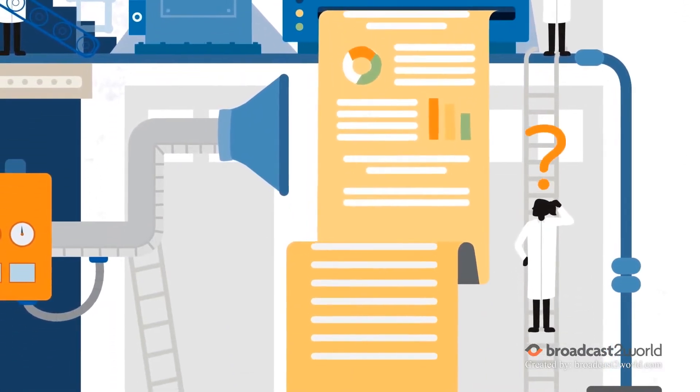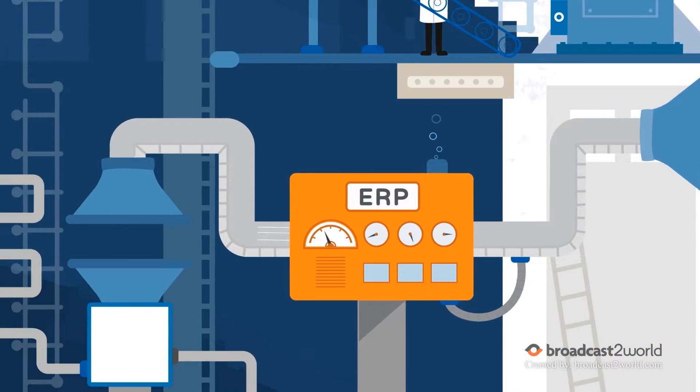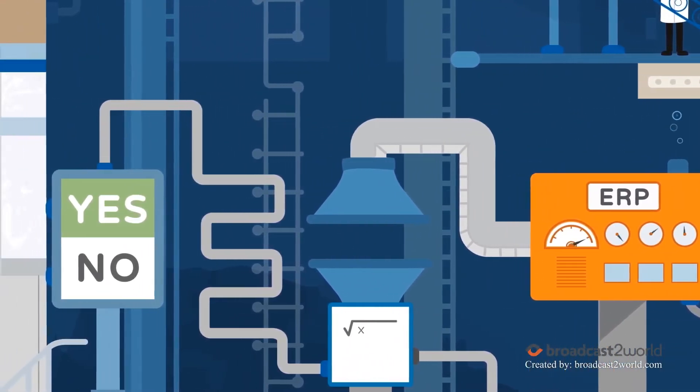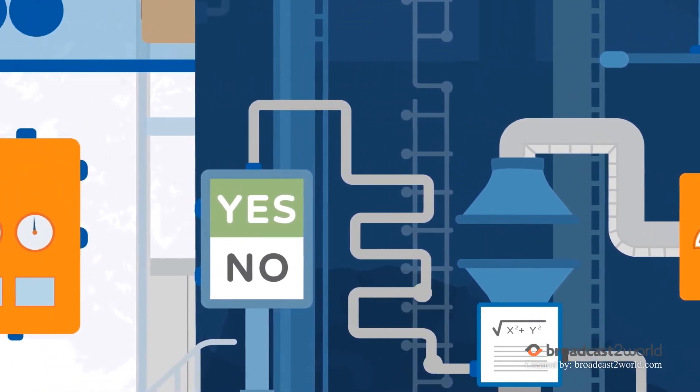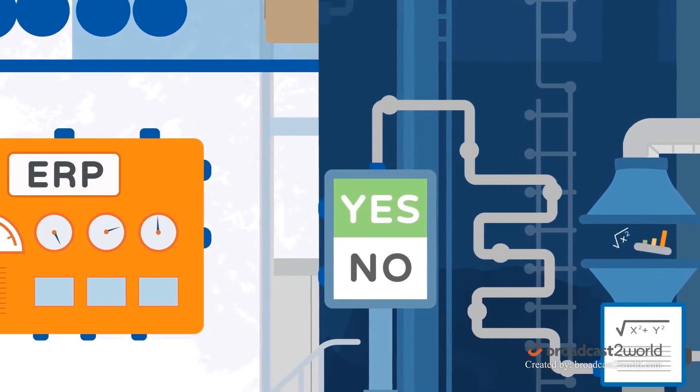But how do you make sense of all this data? For starters, a manufacturer's ERP system must have the ability to collect, filter, and analyze data at critical points in the manufacturing process so that users can make better decisions based on insights from real data.